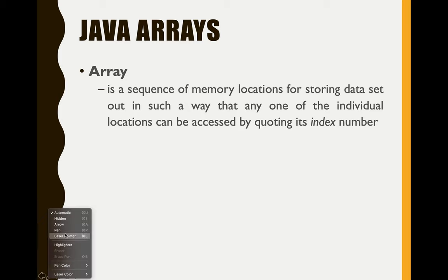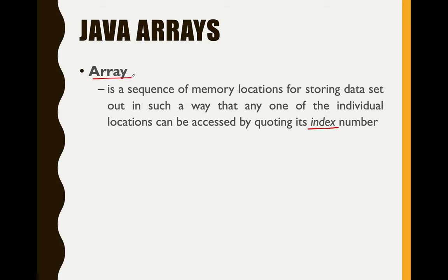I will be explaining what an index is all about. If we talk about an array, it is like a variable that temporarily stores a data or a value. An array will also store data coming from the input or from the user, depending on the program itself, and it can be accessed by using its index number.